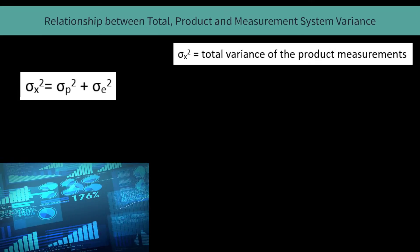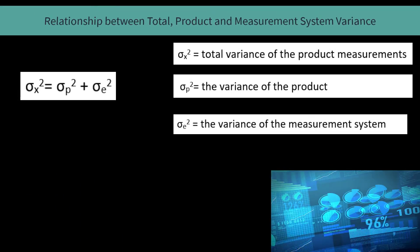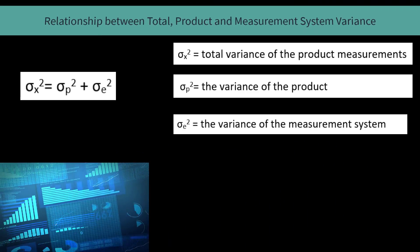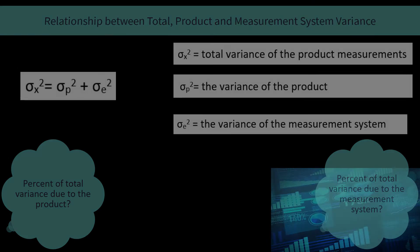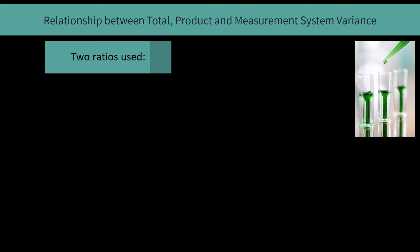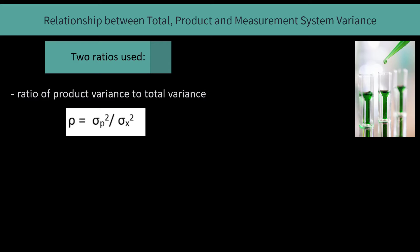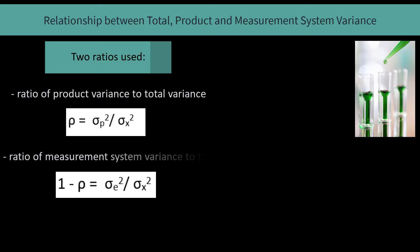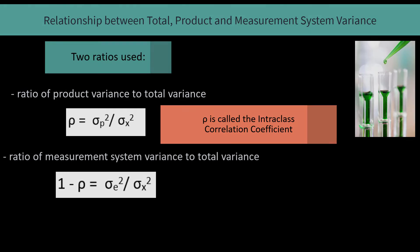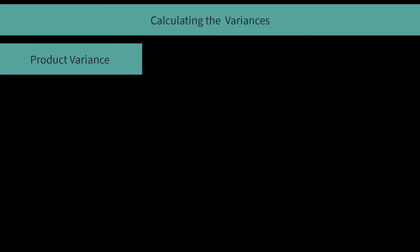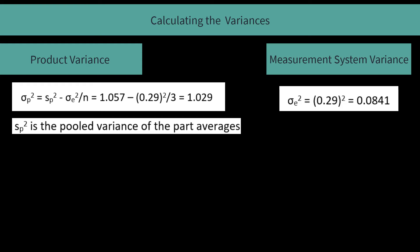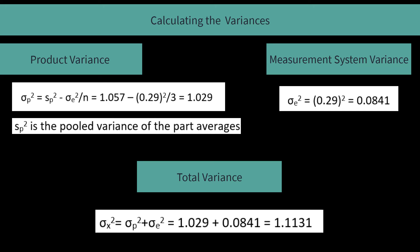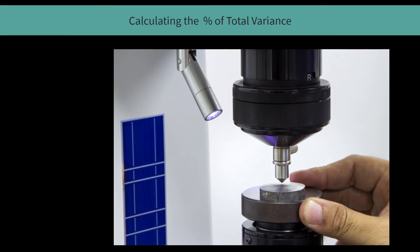Now let's look at the mathematics to figure out the relationship between the variances. The total variance of the product measurements equals the variance of the product plus the variance of the measurement system. We use this equation to determine the percent of total variance due to the measurement system and the percent due to the product. We look at two ratios: the ratio of product variance to total variance (rho), and the ratio of measurement system variance to total variance. Rho is the intraclass correlation coefficient, used to rate the measurement system. The product variance is 1.029, the measurement system variance is the square of 0.29, and the total variance is the sum of those two.